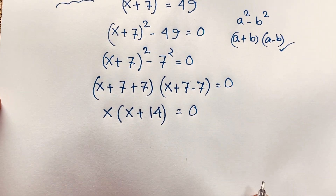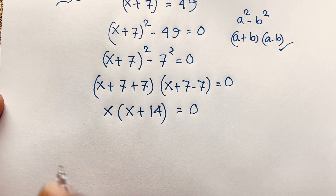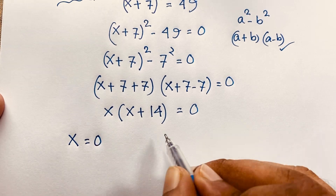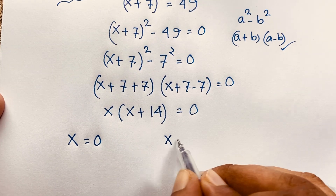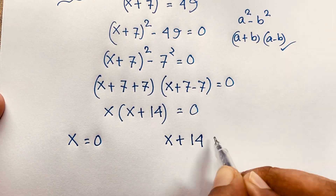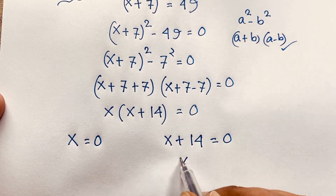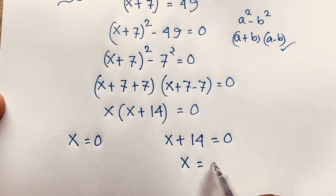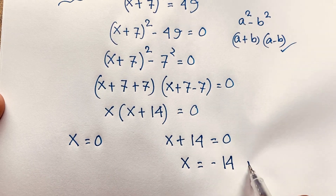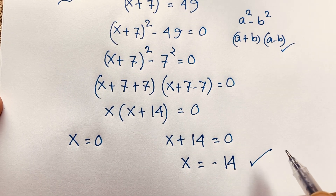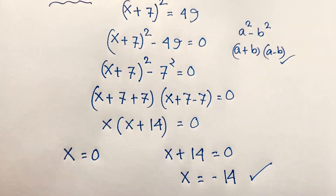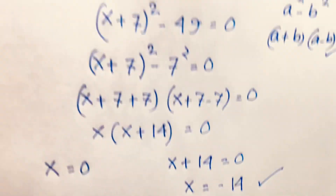Now we are finding two cases. First case: x = 0. Second case: x + 14 = 0, so x = -14. Our final solution is x = 0 and x = -14.